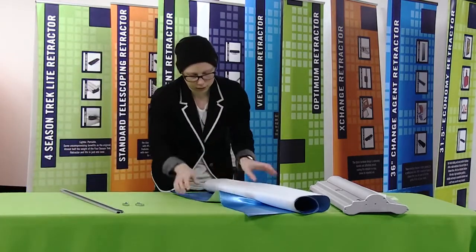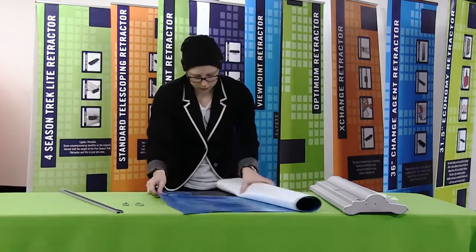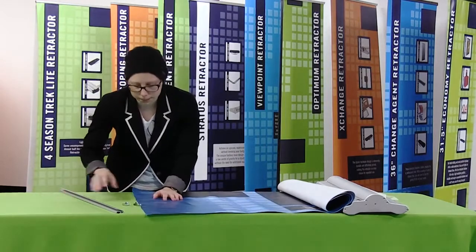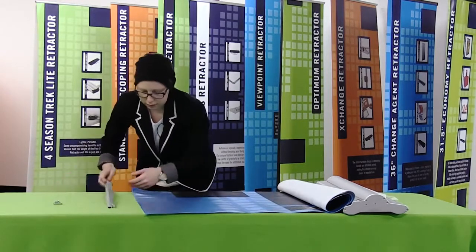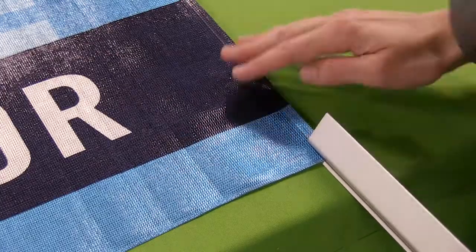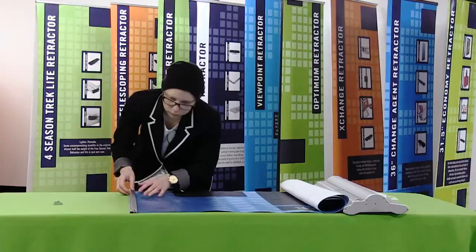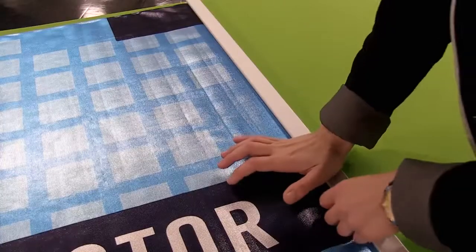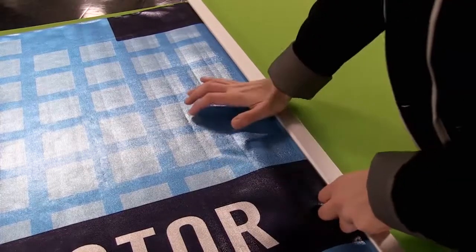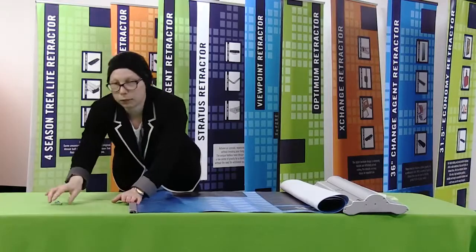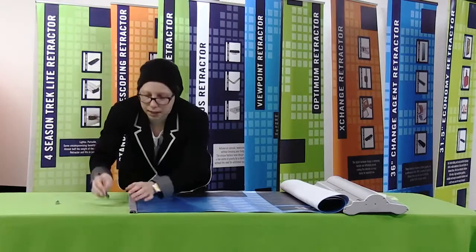To install your new graphic, you're going to install the top edge into the snap rail. I'm just going to slide the snap rail on, and once I have it completely slid on, I'm just going to snap it shut and replace the end caps.